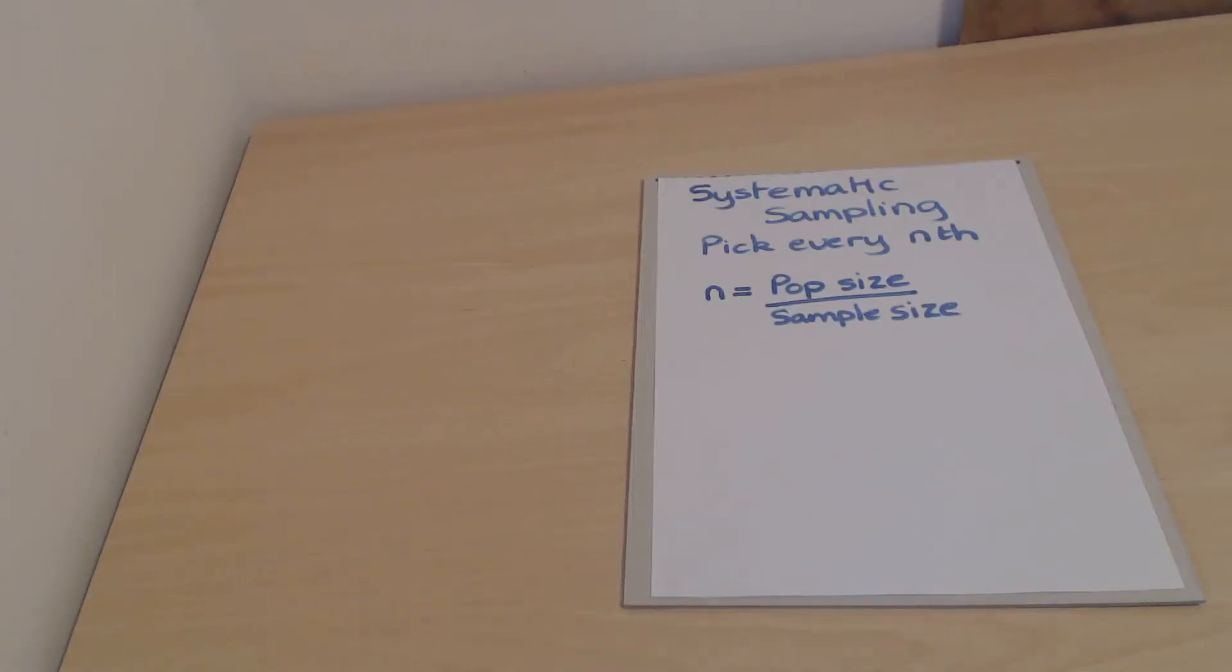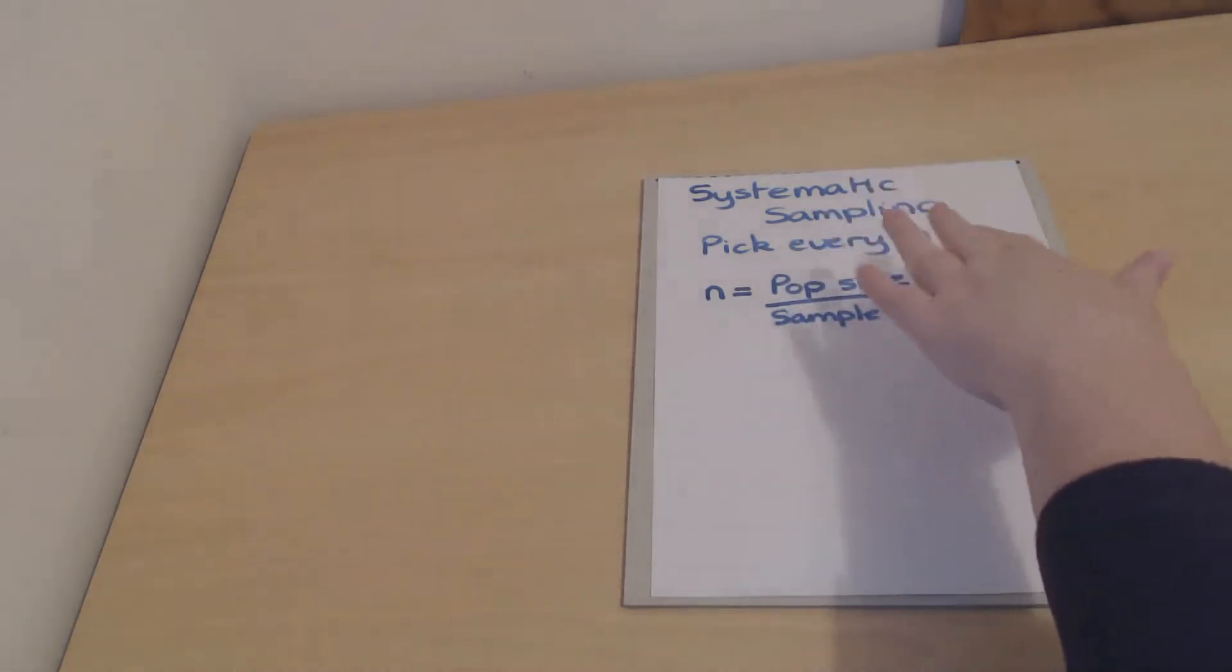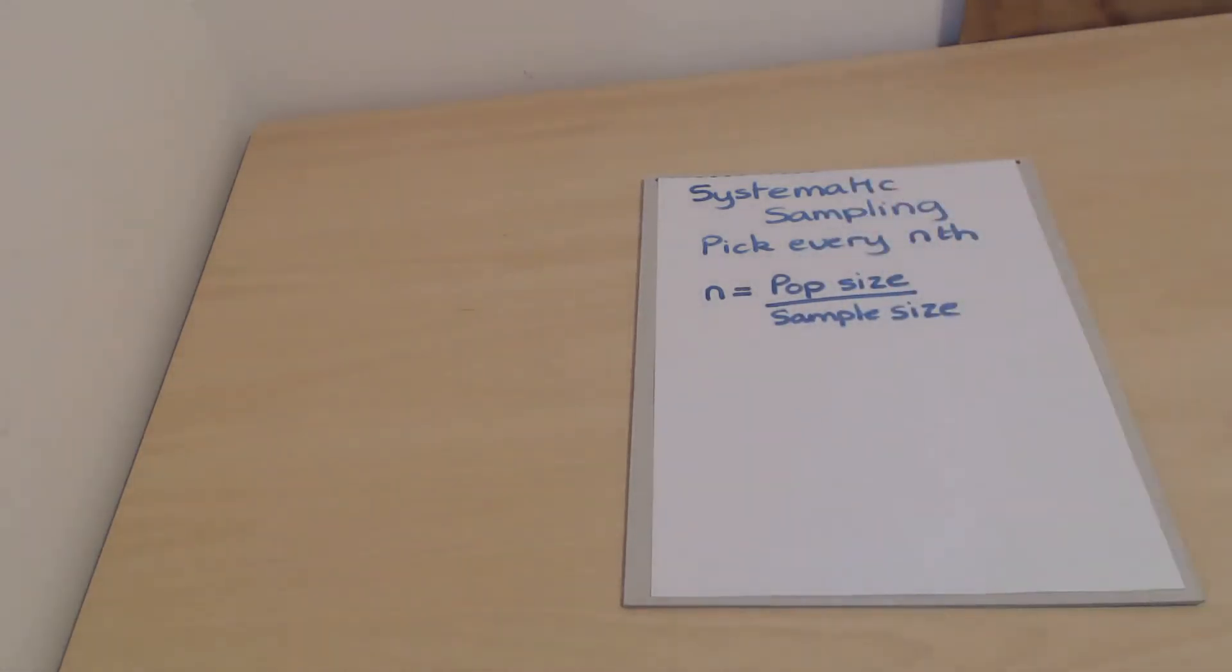Another way of choosing a sample is known as systematic sampling. This basically equates to picking every nth thing or nth person. I'm sure you've experienced that where you've...